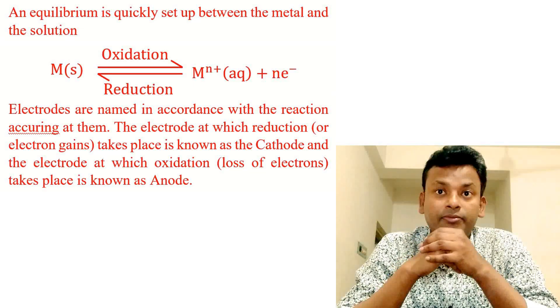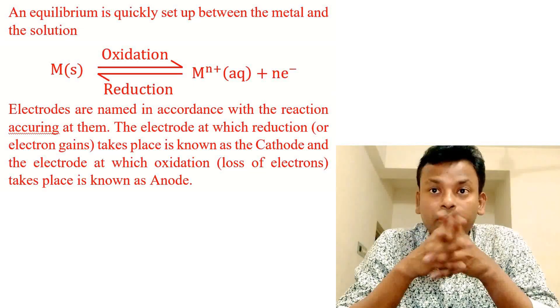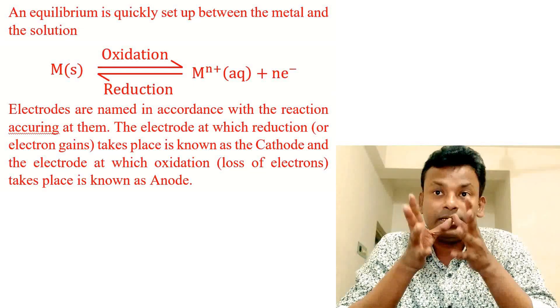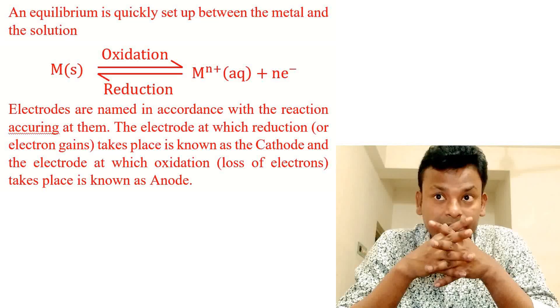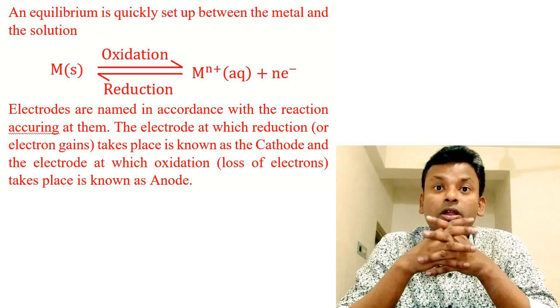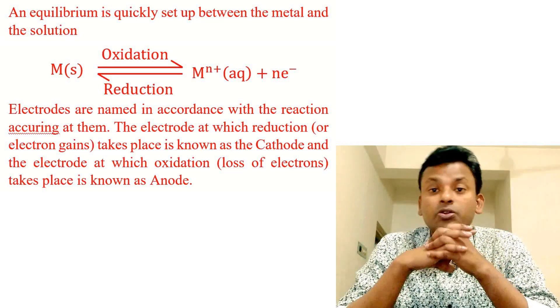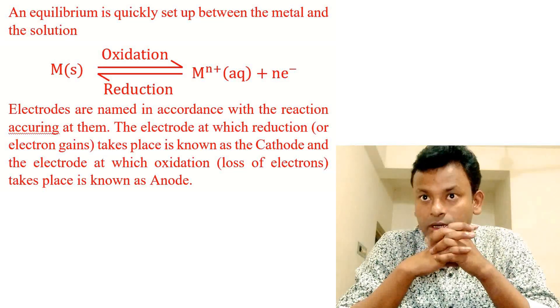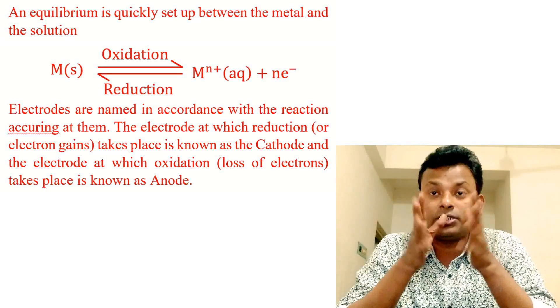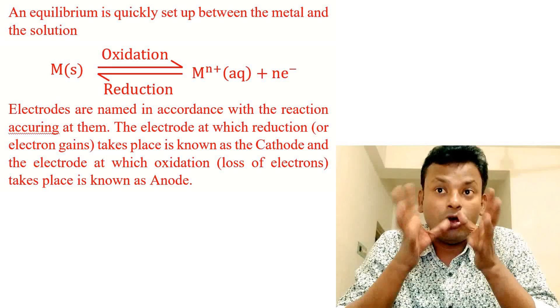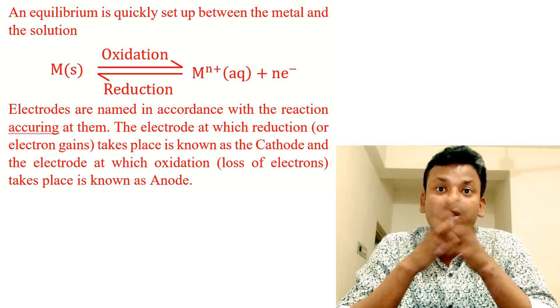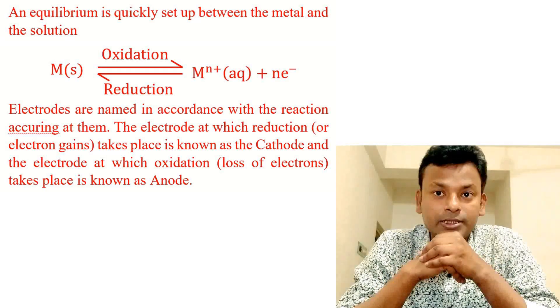Electrodes are named in accordance with the reaction occurring at them. The electrode at which reduction (electron gain) takes place is known as the cathode. The electrode at which oxidation (loss of electron) takes place is known as the anode.